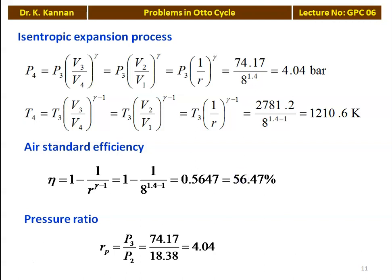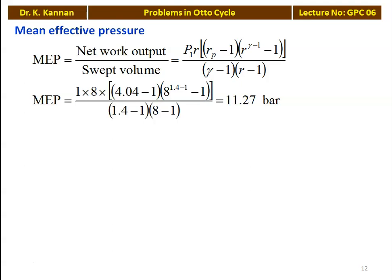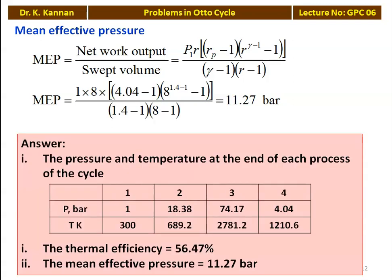The pressure ratio Rp equals P3/P2 equals 74.17/18.38 equals 4.04. Mean effective pressure equals net work done divided by swept volume, using the formula: P1 × R × (Rp - 1) × (R^(gamma-1) - 1) / [(gamma - 1) × (R - 1)]. Substituting P1 equals 1 bar, R equals 8, Rp equals 4.04 gives MEP equals 11.27 bar.